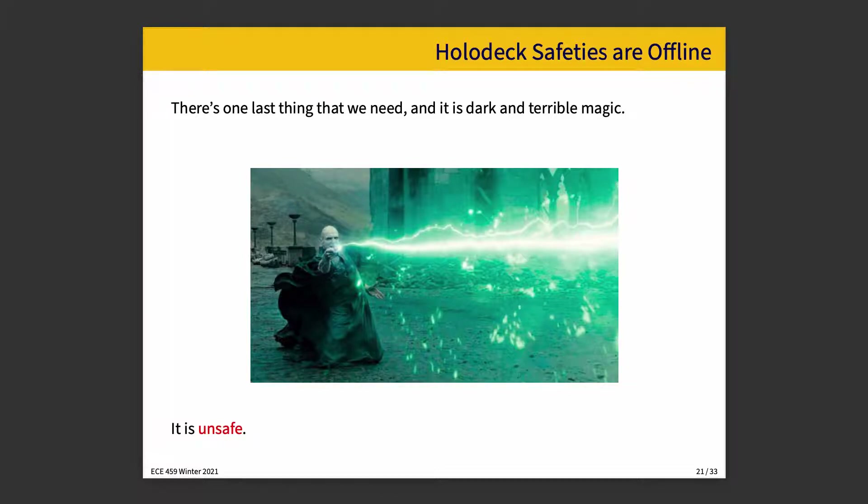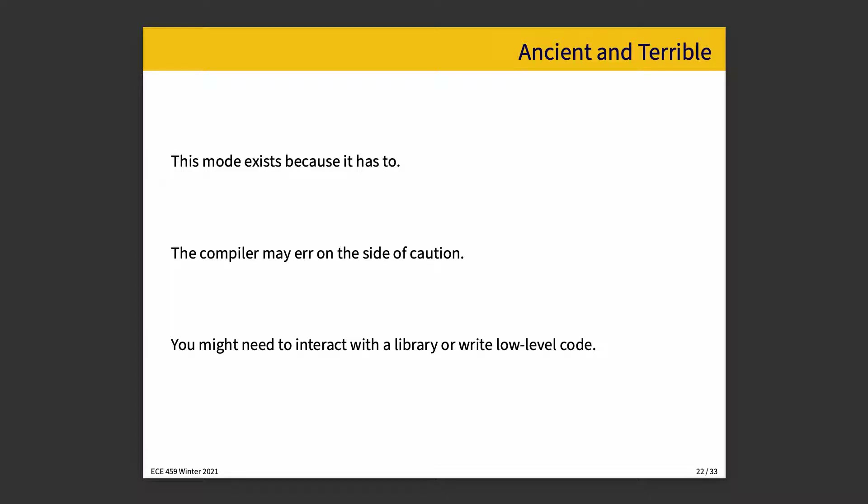Unsafe exists because it has to. The compiler would rather err on the side of caution and say no to a program that's correct than say yes to one that is incorrect. You might also need to interact with a library, particularly one not written in Rust, which doesn't offer you the same guarantees, or interact with the hardware, write some low-level code, something like that.